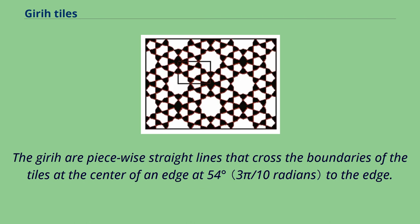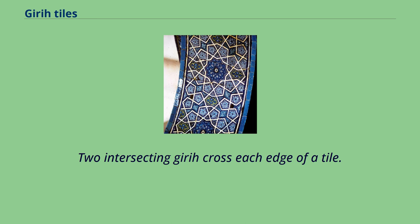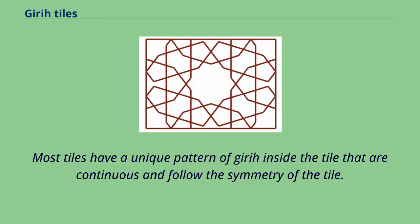The girih are piecewise straight lines that cross the boundaries of the tiles at the center of an edge at 54 degrees (3π/10 radians) to the edge. Two intersecting girih cross each edge of a tile. Most tiles have a unique pattern of girih inside that are continuous and follow the symmetry of the tile.